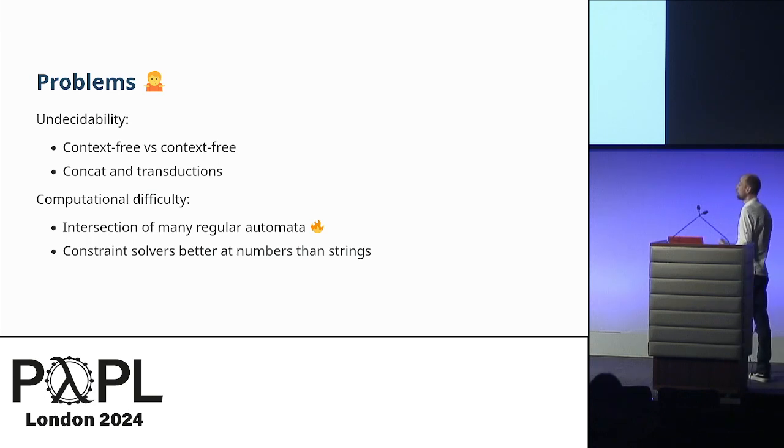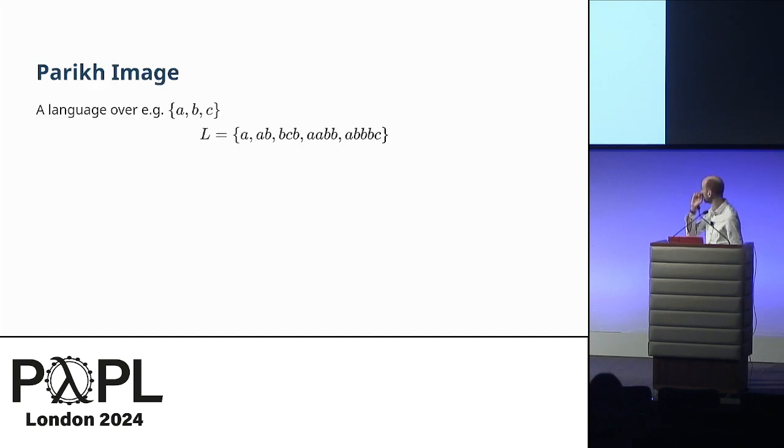There are also just other problems about computational difficulties. Even if we're just dealing with nice regular things, we might end up having to intersect lots of regular automata, and that gets pretty big very quickly. That's an exponential blow-up just to intersect them. One observation is that constraint solvers, SMT solvers, are getting much better at strings. That's been a hot topic over the past 10 years. But they've been very good at integers for a long time, so their support is much more mature for numbers than it is for strings.